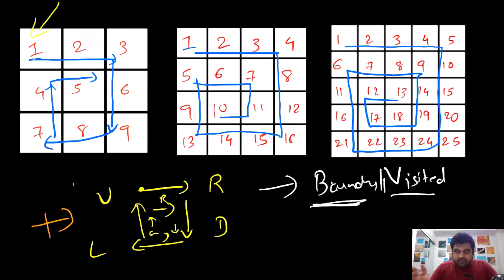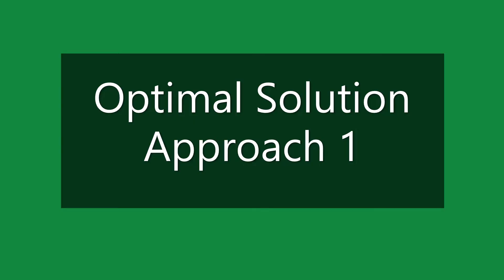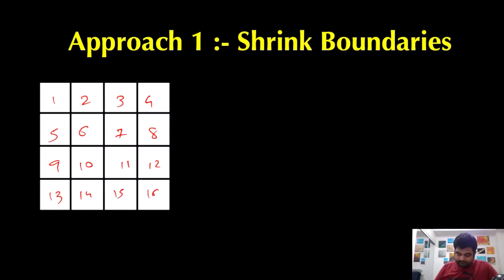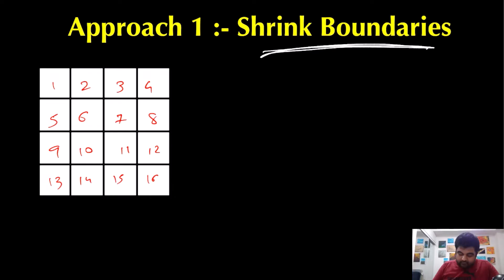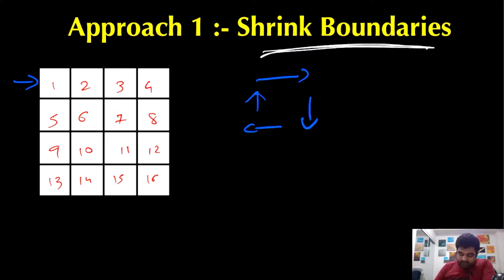To solve this problem, there are actually two different solutions, and I'm showing you both. You can pick whichever you want — both have pros and cons, and you can discuss with your interviewer which to pick. The first approach is that we actually shrink the boundaries and we don't care about visited nodes. We always start at the initial position, following the direction sequence: right, then down, then left, then up.